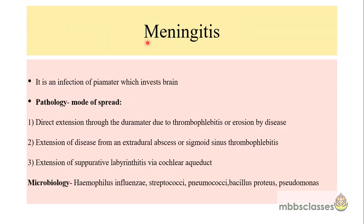Meningitis is one of the most common intracranial complications of chronic otitis media. It is an infection of the meninges which invest the brain. The mode of spread of infection to the meninges could be through direct extension through the dura mater due to thrombophlebitis, or by erosion by cholesteatoma or granulation tissue. It could be an extension from extradural abscess or sigmoid sinus thrombosis. In some cases, the patient first develops suppurative labyrinthitis and then the infection reaches the meninges via the cochlear aqueduct.